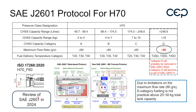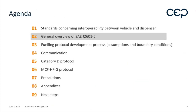Therefore, in the next review of the SAE J2601 for light duty vehicles in 2024 — subject to consensus — the intention is to probably remove category D from the light duty vehicle protocol. This is very important, and I will come back to why it actually needs to be removed. That concludes chapter one: the current standards and an overview of the upcoming standards for interoperability.